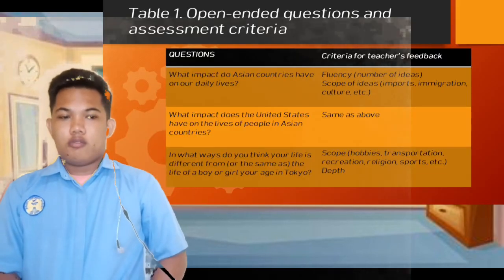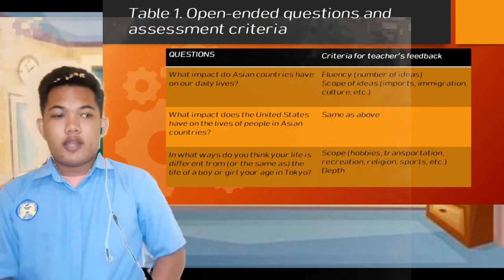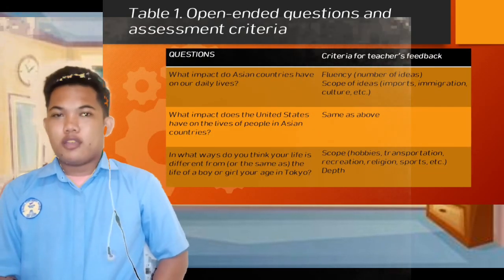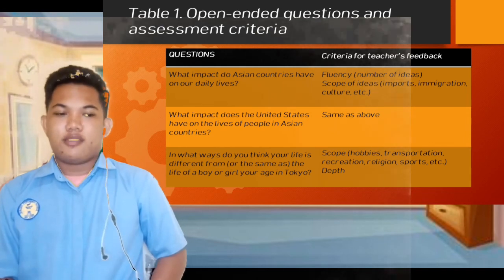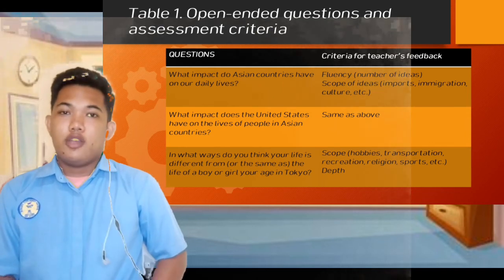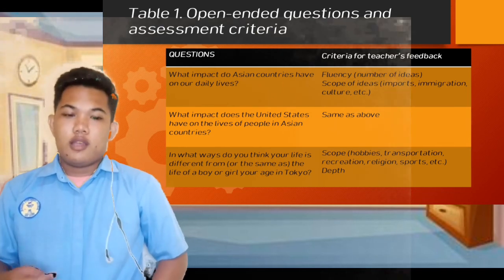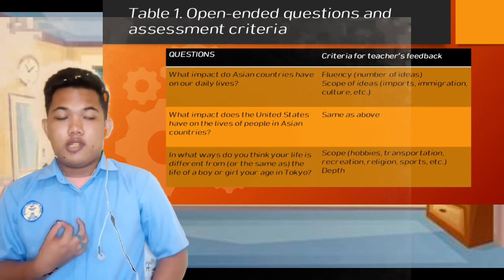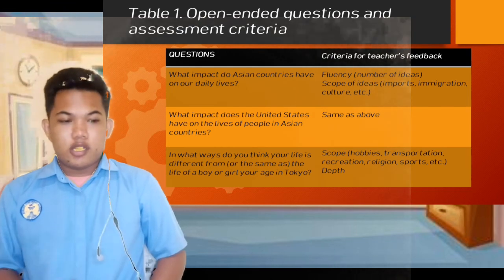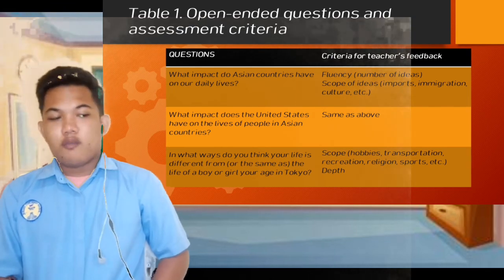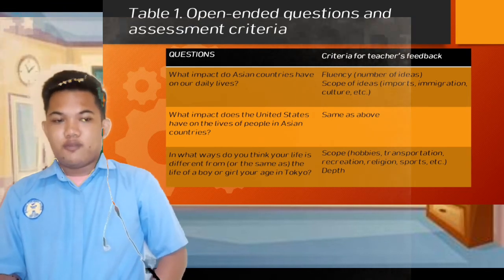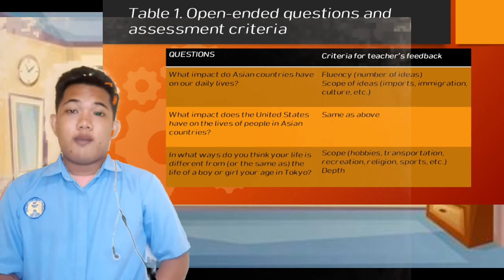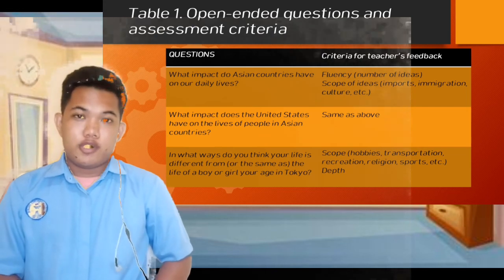In Table 1, open-ended questions and assessment criteria, we have two columns: the questions and criteria for teacher's feedback. Under the questions, we have three questions.